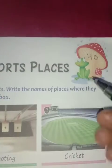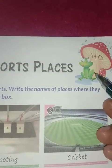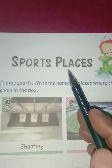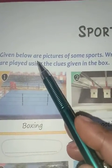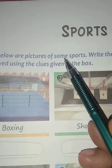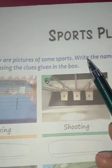Good morning my lovely students, welcome to your GK class. Today I will teach you lessons 40, 41, and 44. Now let's start. Lesson 40 is about sports places. Given below are pictures of some sports — write the names of places where they are played using the clues given in the box.